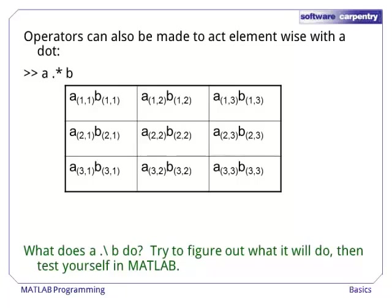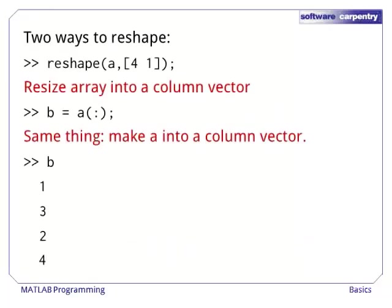Arrays can also be reshaped using two methods. The first is the function reshape. The first parameter to reshape is the array you want to reshape, while the second is a vector of dimension sizes. In this case, we want to transform A into a vector with four rows and one column. Since vectorizing an array is such a popular operation, there is an equivalent shortcut called the colon operator.